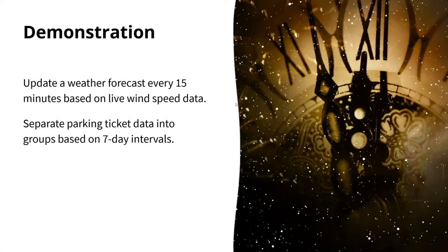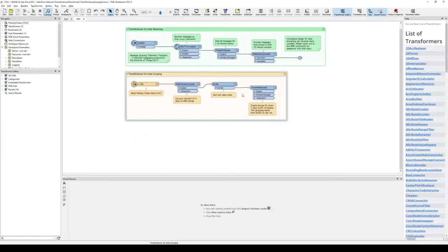There are two scenarios here. First: updating a weather forecast every 15 minutes based on live wind speed data — at an airport, every 15 minutes we need to give a new wind speed reading, while wind speed sensor data comes in every few seconds. Second: a dataset of parking tickets grouped into seven-day intervals.